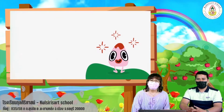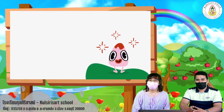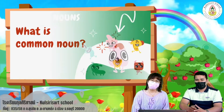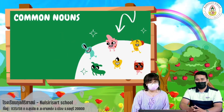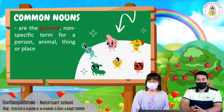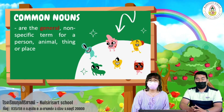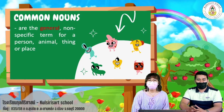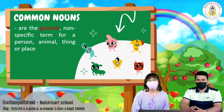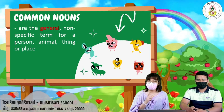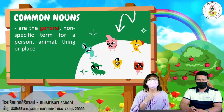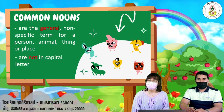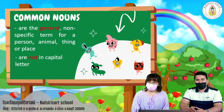First, we will learn about common nouns. What are common nouns? Common nouns are the general or non-specific term for person, animal, thing, or place. And don't forget, common nouns are not written in capital letters.